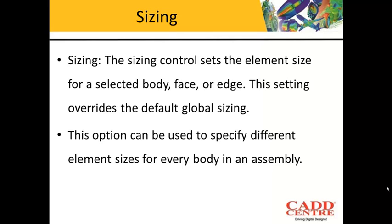This option will be used to give different element sizes for different parts in an assembly. Whenever you are working with assemblies, each component in the assembly is of different size and shape. Therefore, I need to have a unique element size for every component in that assembly, and during that time I can use the sizing option.